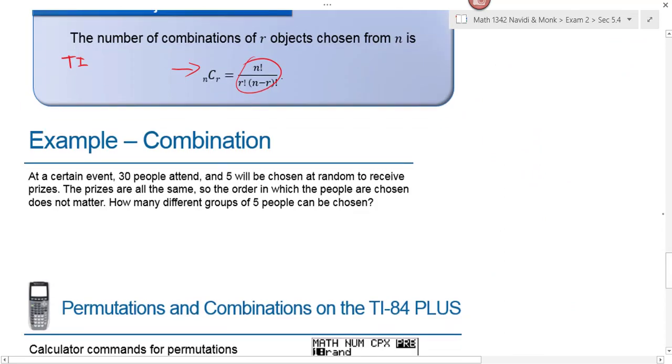In this example problem, we're told that at a certain event, 30 people attended and five will be chosen at random to receive a prize. The prizes are all the same, so the order in which you're drawn doesn't matter. Since the order doesn't matter because you're either picked or you're not—that's all you care about. You don't care if you're picked first, second, third, or fifth because all five prizes are the same. So the order doesn't matter. And that's the first thing you want to ask yourself whenever you encounter these problems. Does the order matter? If it does, use permutations. If it doesn't, use combinations. Then you've got to decide what is your sample size and how many are you selecting.